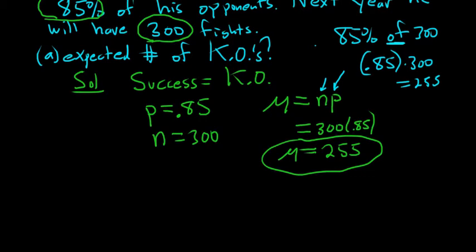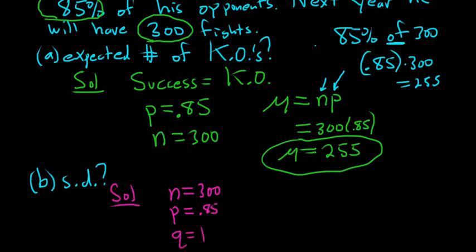Part b, we want the standard deviation. Let's find the standard deviation of the number of KOs. So the formula for the standard deviation was the square root of npq. So we know n here is 300. P was 0.85. Q is 1 minus p. So Q is 1 minus 0.85. So Q is 0.15.